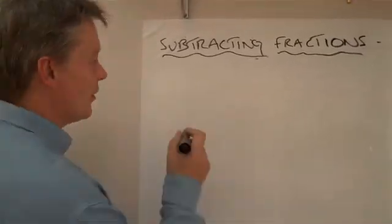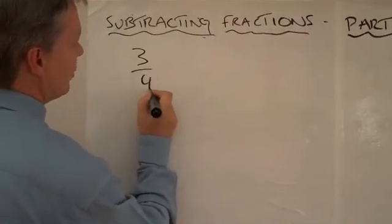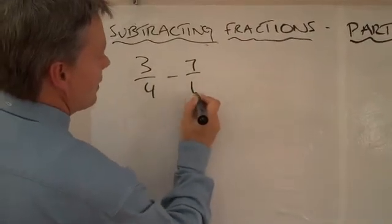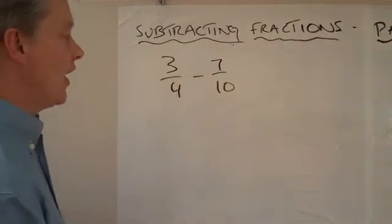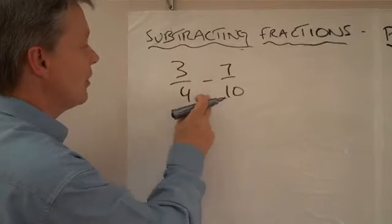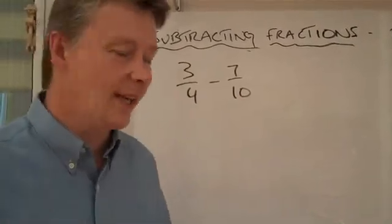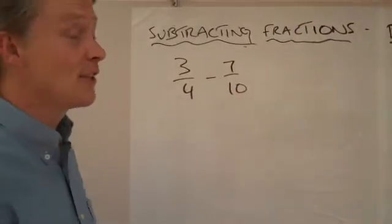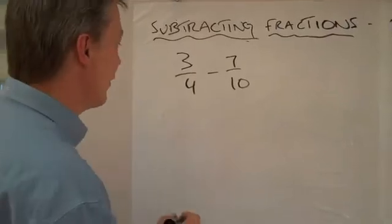So the question I'm going to ask is three quarters take away seven tenths. Now, if you do the addition of fractions, you'll know that the greatest common factor of those two is the number 20. It could be 40 if you wanted, but 20 is a little bit easier to deal with.